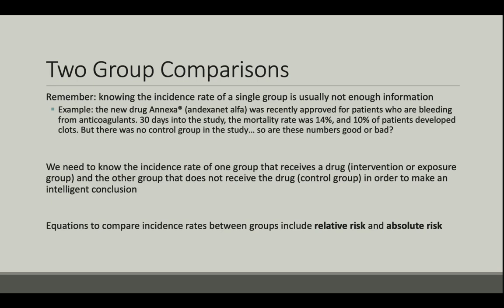For example, the new drug Annexa was recently approved for patients who are bleeding from anticoagulants. Thirty days into the study, the mortality rate was 14% and 10% of patients developed clots, but there was no control group in the study. So, are these numbers good or bad? We need to know the incidence rate of one group that receives the drug — the exposure group — and another group that does not receive the drug — the control group — in order to make an intelligent conclusion.